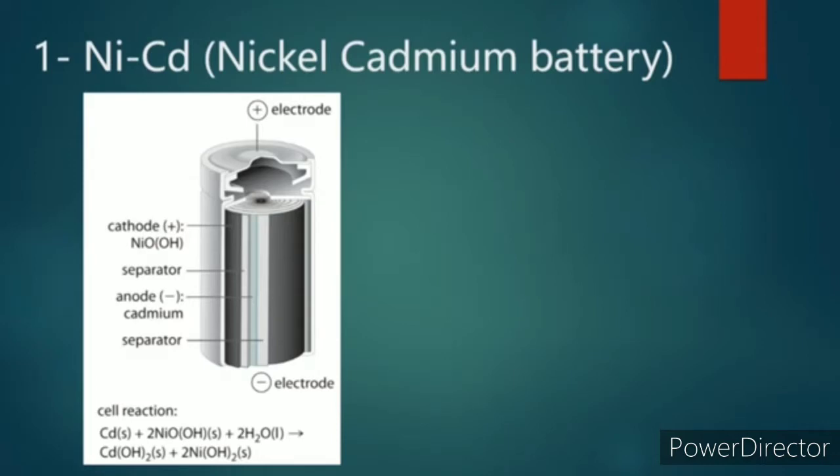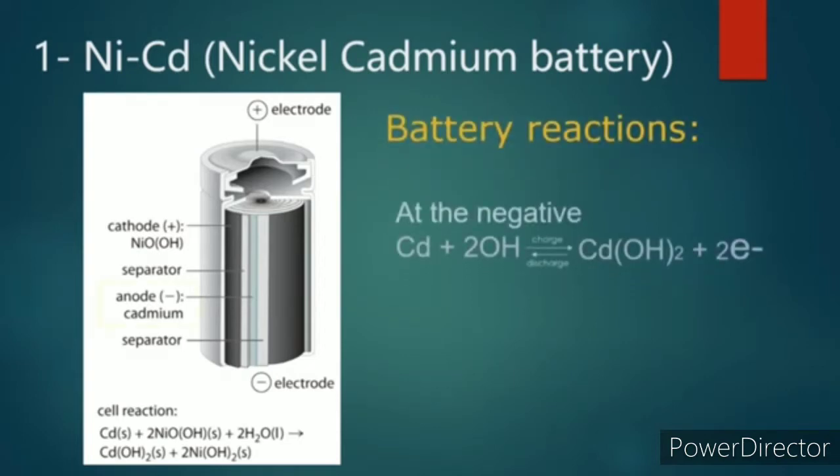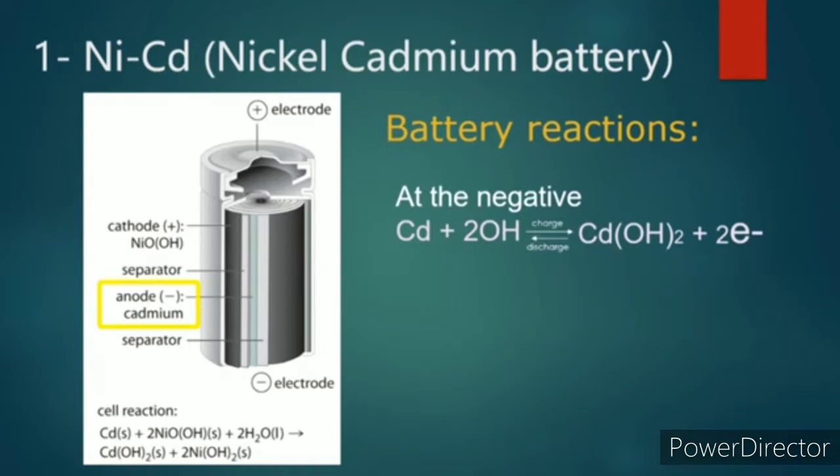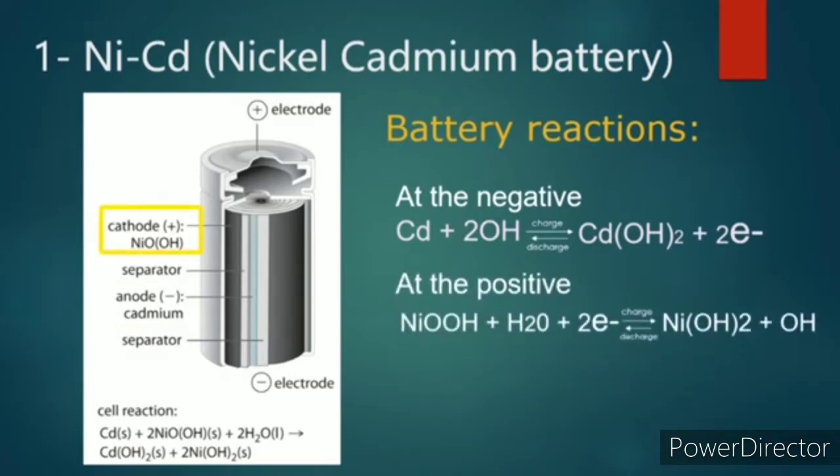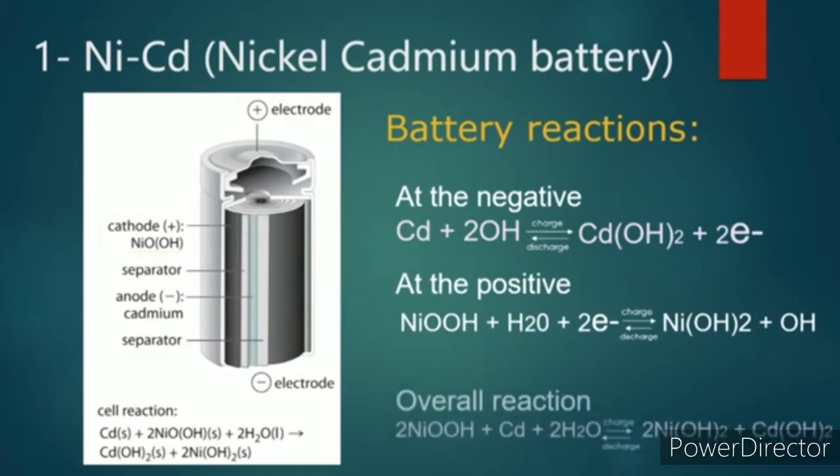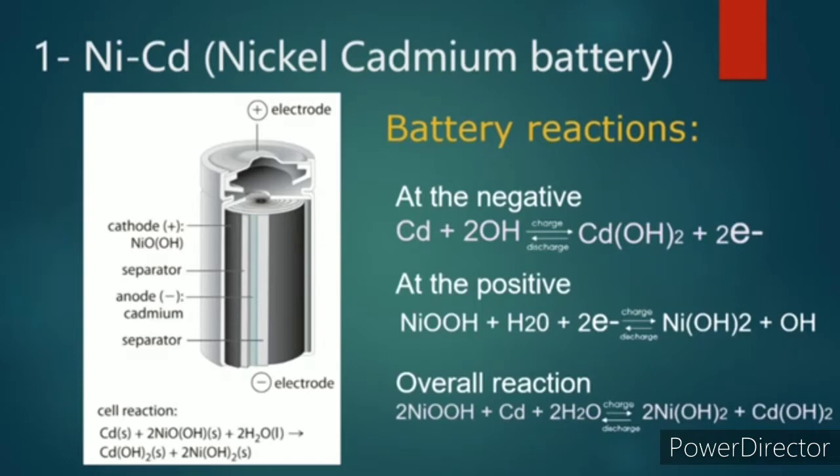Due to their low internal resistance and very good current conducting properties, nickel cadmium cells can supply extremely high currents and can be recharged rapidly. At the anode, cadmium loses two electrons and combines with hydroxide ions to form cadmium hydroxide. At the cathode, hydrated nickel oxide is reduced and reacts with water to form nickel hydroxide and hydroxide ions.